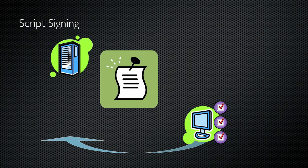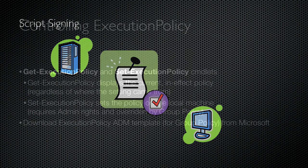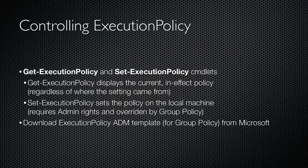Finally, does the computer trust the CA that issued the certificate? If all of these checks pass, then the script is allowed to execute. PowerShell provides two cmdlets — Get-ExecutionPolicy and Set-ExecutionPolicy — which let you work with the execution policy on your computer.